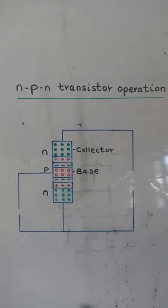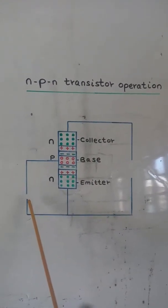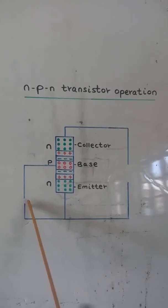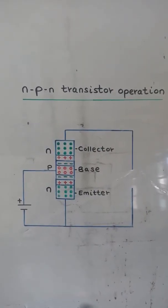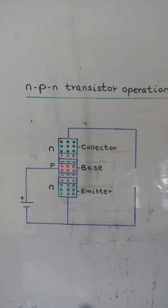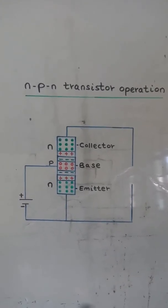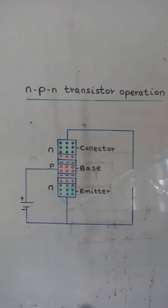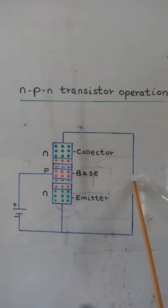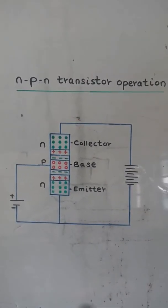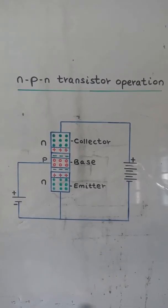The three terminals are the base, collector, and emitter. The base-emitter junction should be forward biased — the base is connected to the positive terminal of the battery and the emitter is connected to the negative terminal. The base-collector junction should be reverse biased, so the collector is connected to the positive terminal of the battery.